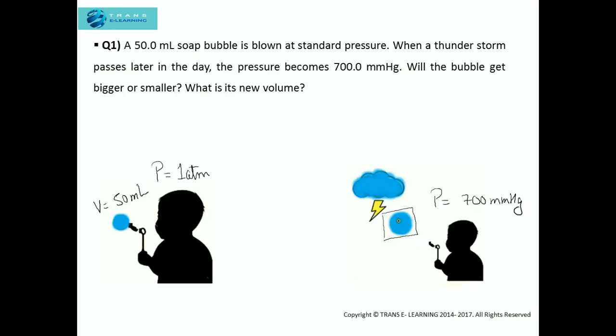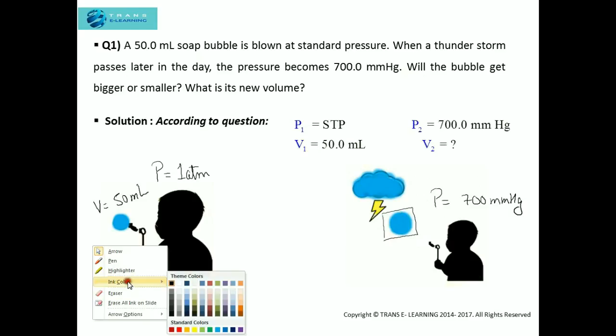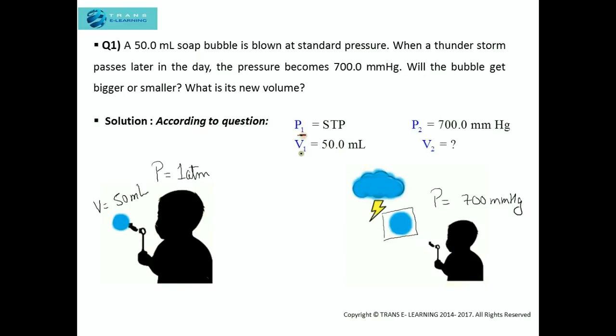For that, first of all we need to analyze what is given and what needs to be found here. The given values are P₁ and V₁ of the bubble at standard pressure when the volume was 50 mL. Here you can see that P₂ is given in mmHg. So instead of taking P₁ as 1 atmosphere, I will use this conversion that 1 atmosphere is equal to 760 mmHg.